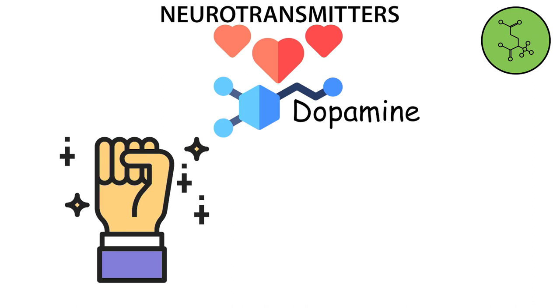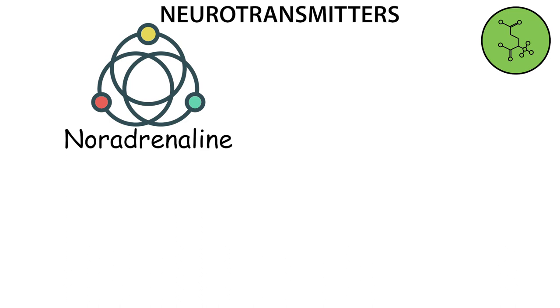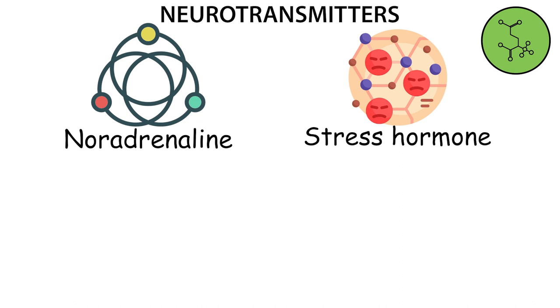Noradrenaline. It is also known as the stress hormone because of its dual role as a hormone and as a neurotransmitter. It is a type of neurotransmitter that has an excitatory function which is responsible for activating the sympathetic nervous system. Among its functions is also the regulation of physical and mental arousal states.